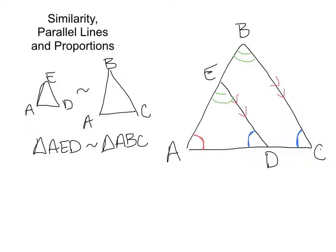Because we know they're similar, we know some cool things about the sides of these two triangles. We know that side AE over side AB is the same as side AD over side AC. And that ratio is also similar for side DE over side CB.